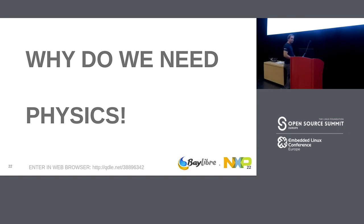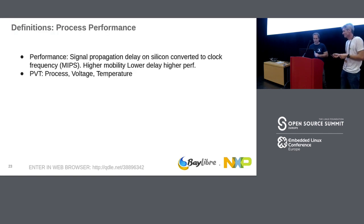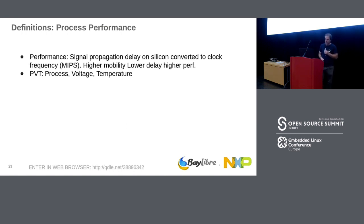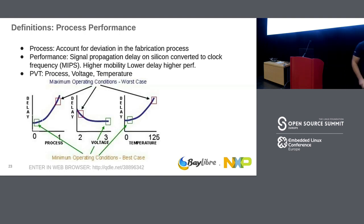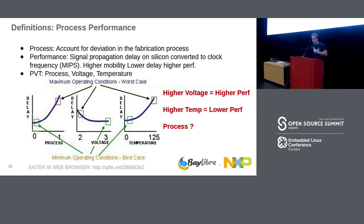Why do we need TPMP? Let's do a bit of physics. What we call performance is mainly the clock speed — the propagation delay in silicon. Silicon mainly depends on three parameters: process, voltage, and temperature. For voltage and temperature, it's straightforward: when you increase voltage, you get minimum delay — maximum performance. When you increase temperature, performance drops. High voltage means high performance; high temperature means low performance.